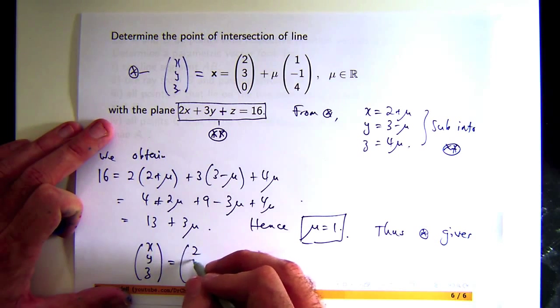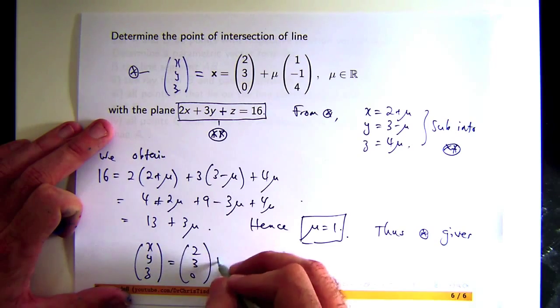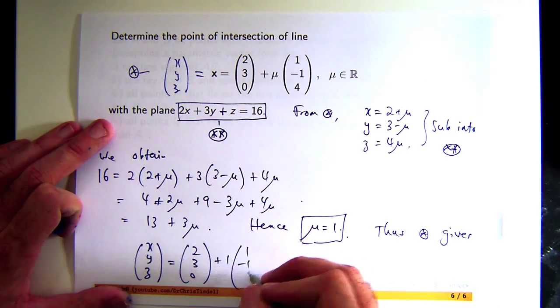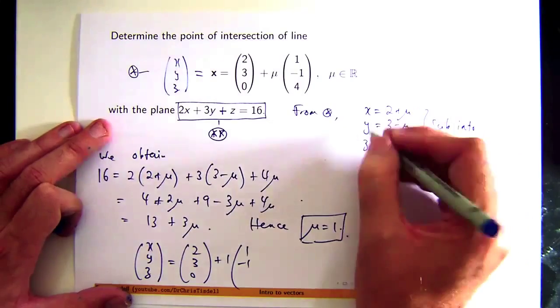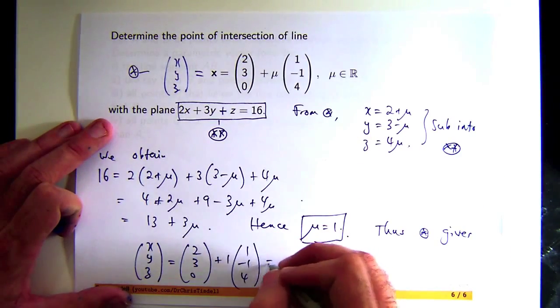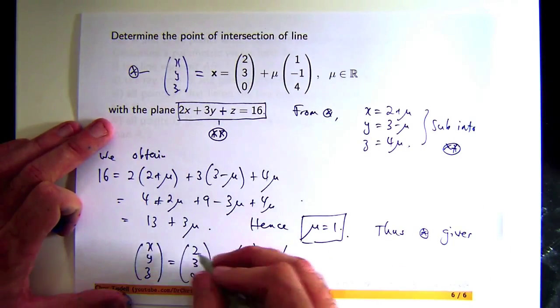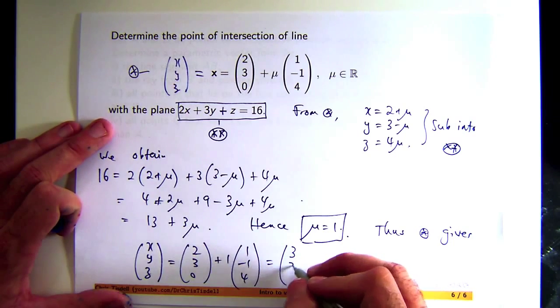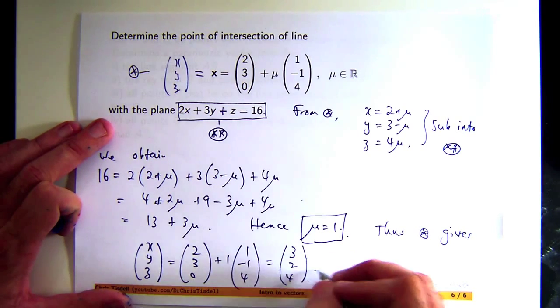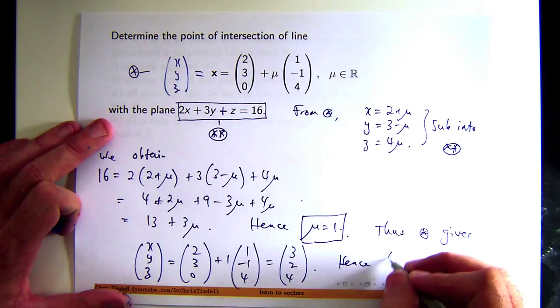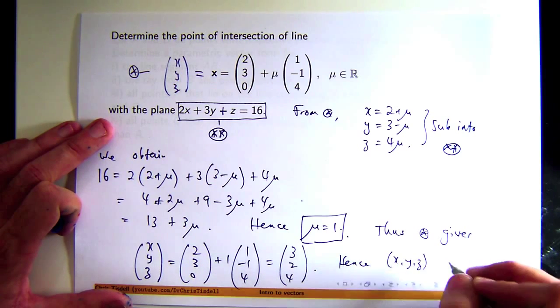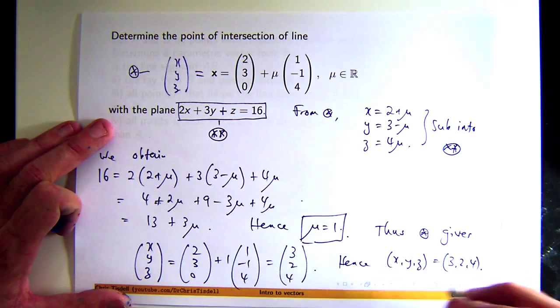So it's going to be two, three, zero, plus one, or we could just go up here actually and do it up there, that would be just as good. In fact, probably better. So you get three, two, and four. Hence our point of intersection is here.